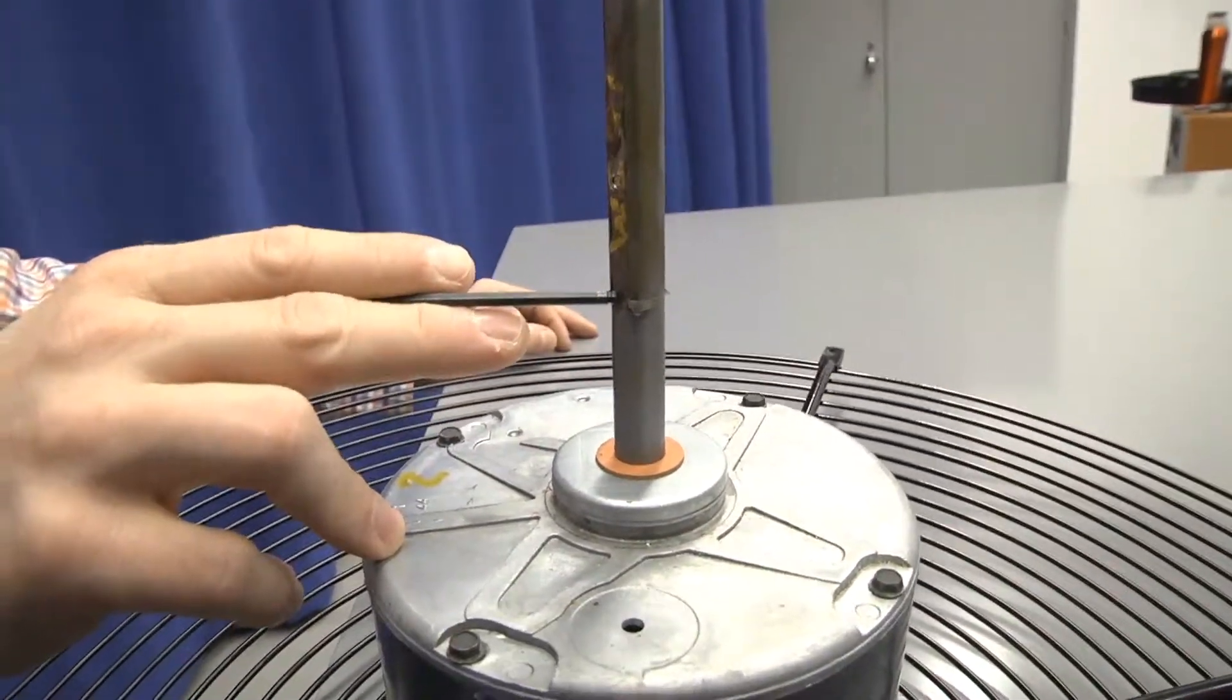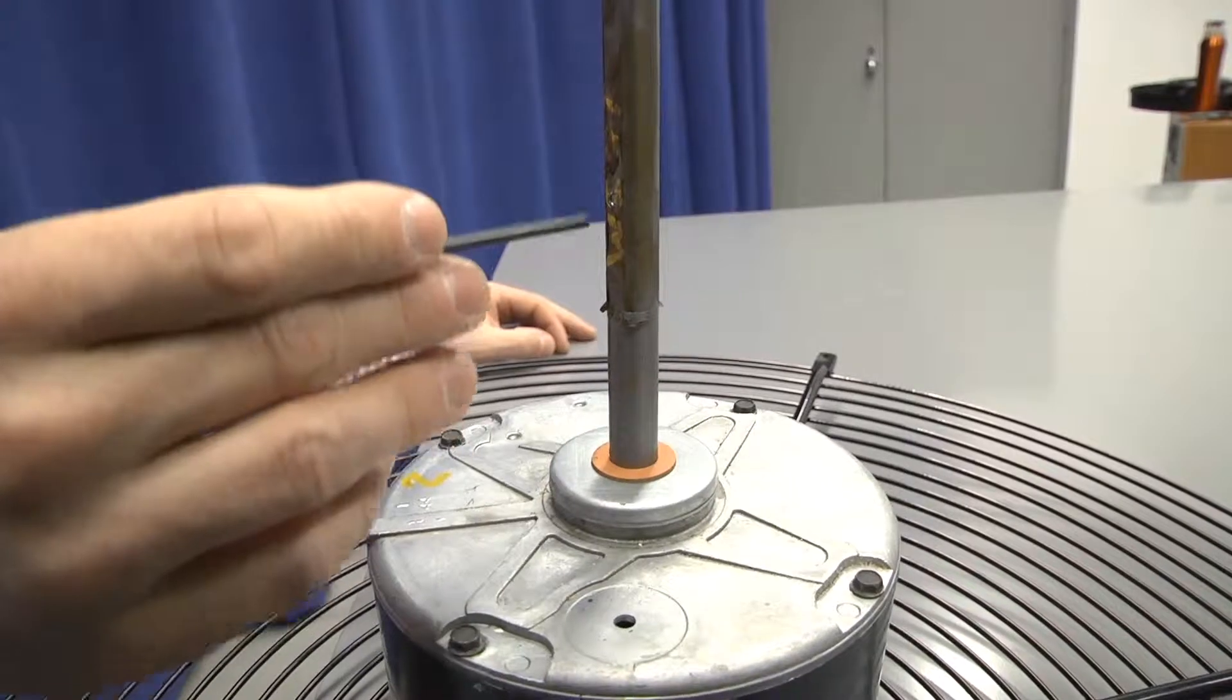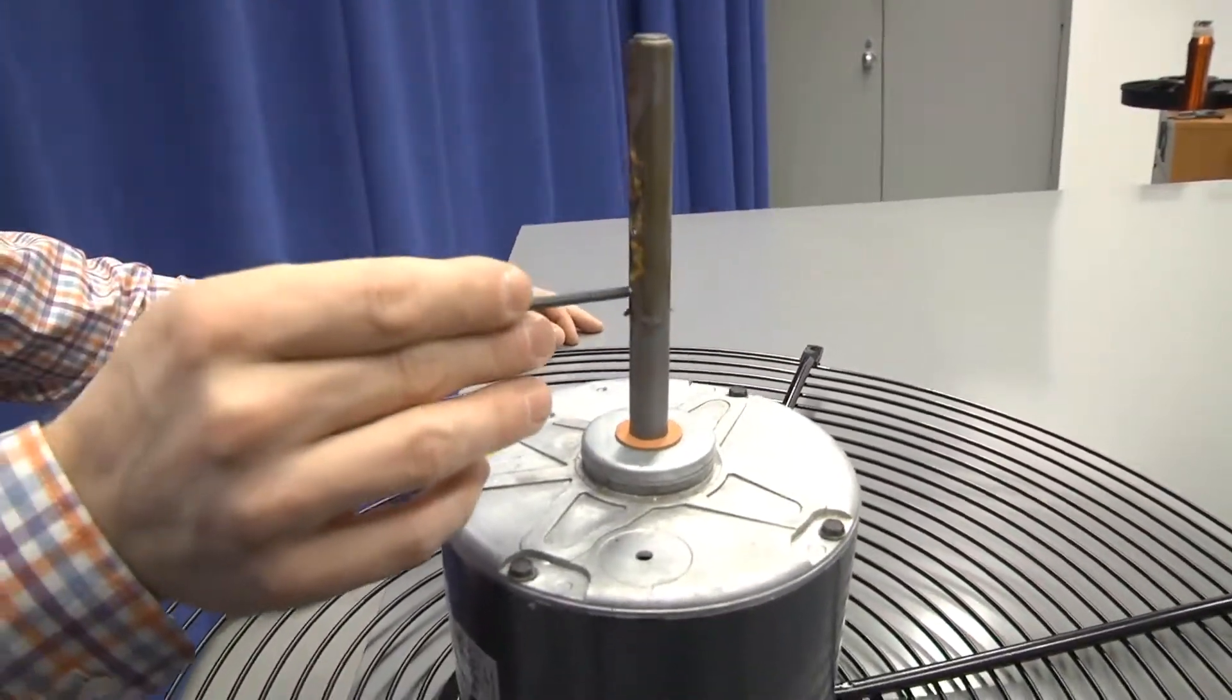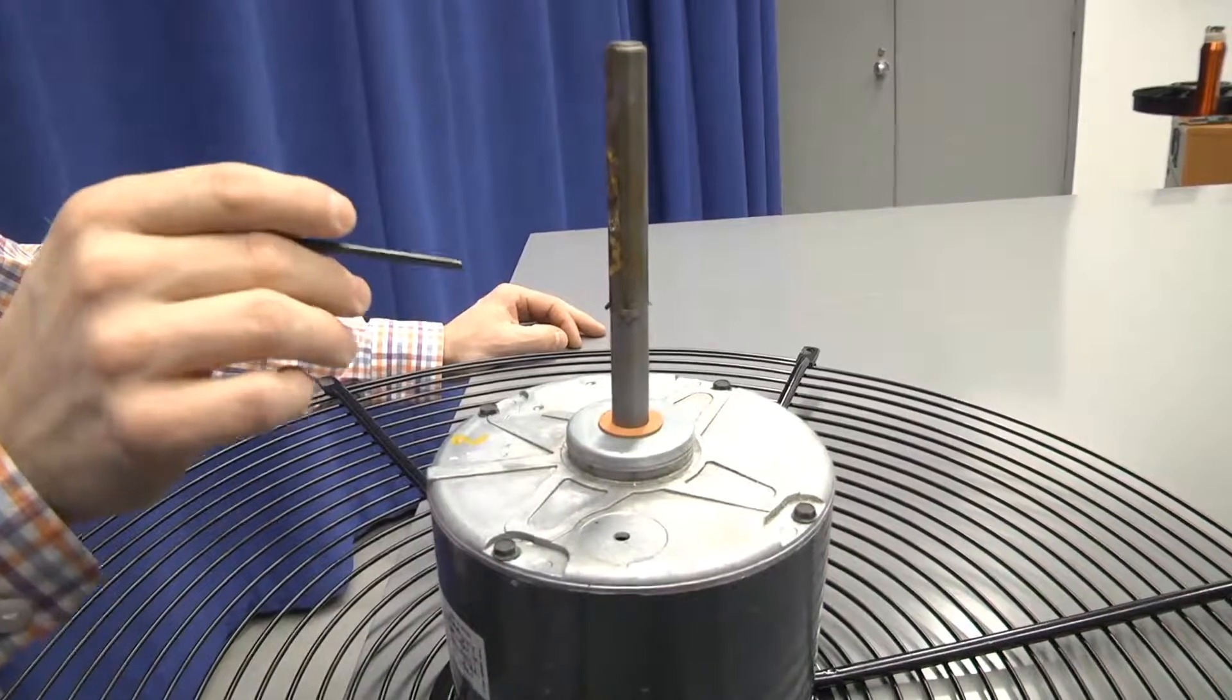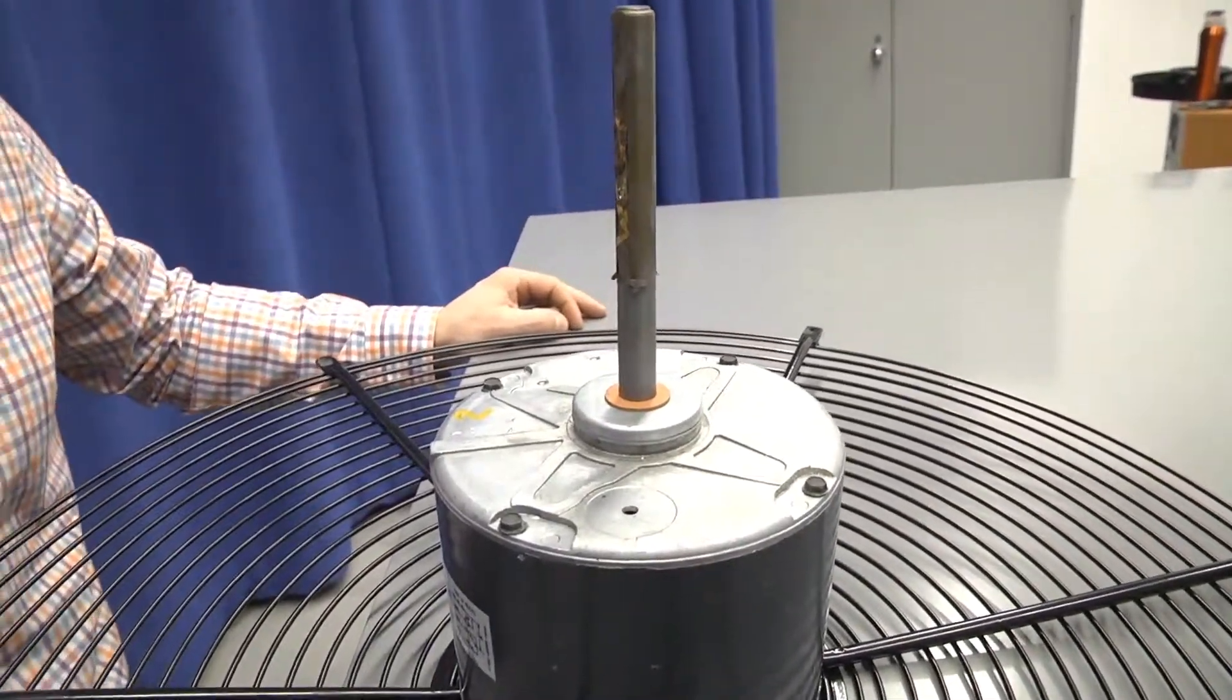So when you put the fan back on, the D is going to ride down the flat portion of the shaft and then bottom out on that ridge there. And that sets it in the correct axial position in the orifice.